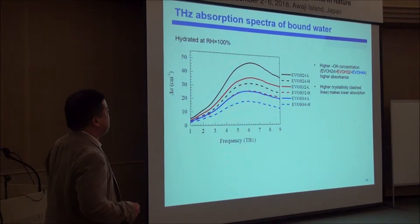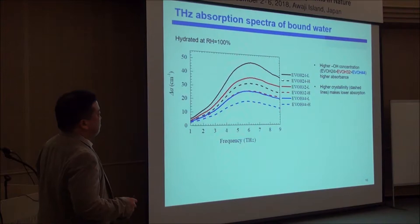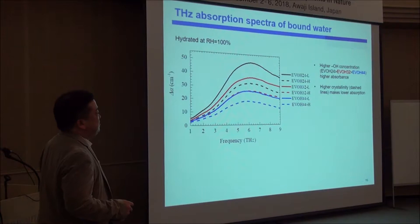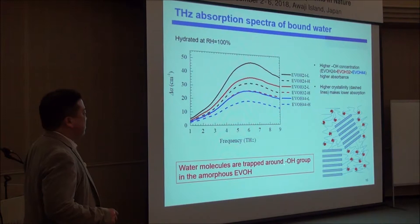We compared how the spectra change across samples, measuring all six samples at 100% humidity. The black, red, and blue lines show the difference in OH concentration — higher OH concentration produces higher absorption. The solid and dashed lines show the difference in crystallinity — higher crystallinity gives lower absorption. These two facts suggest that water molecules are trapped around OH groups in the amorphous regions of EVOH.